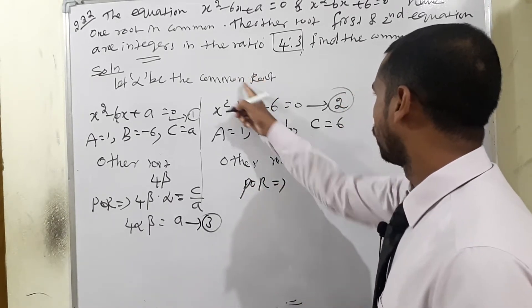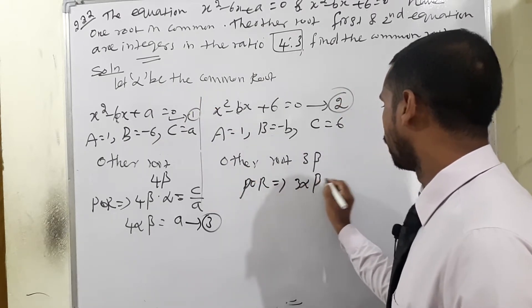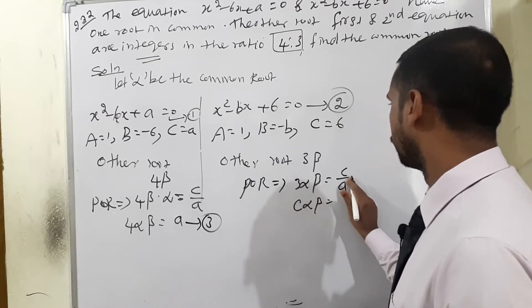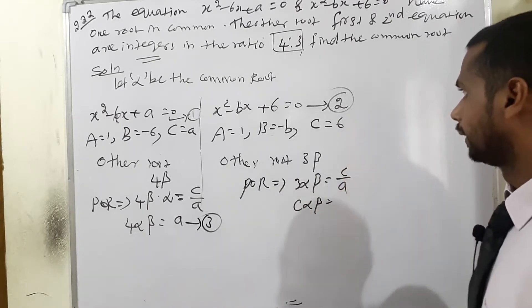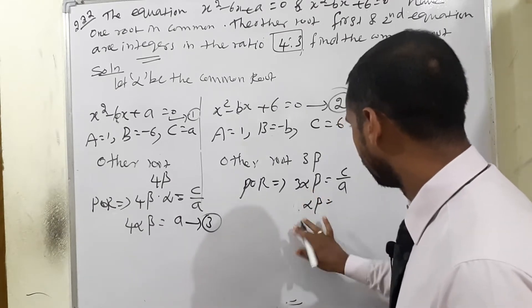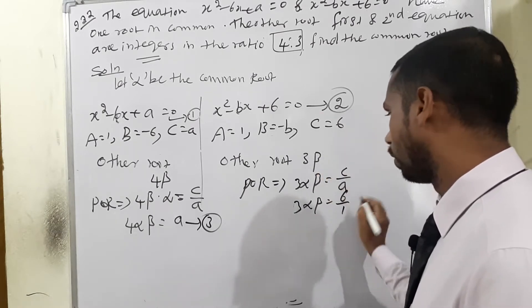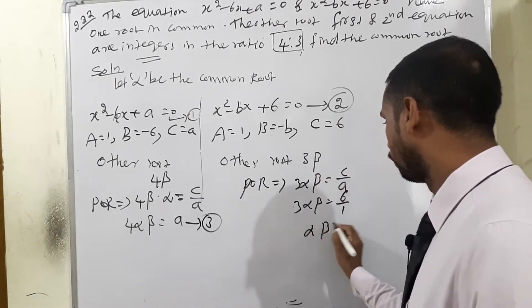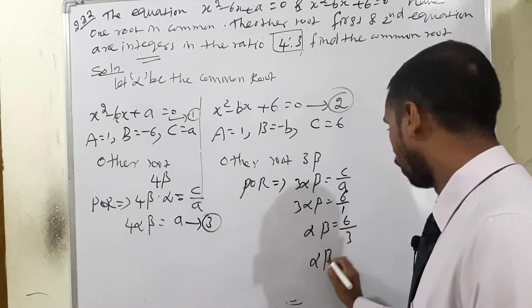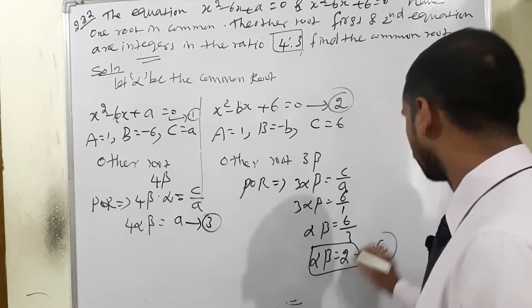For the second equation, using product of roots: alpha × 3·beta = C/A = 6/1. Therefore 3·alpha·beta = 6, so alpha·beta = 6/3 = 2. This is equation number 4.